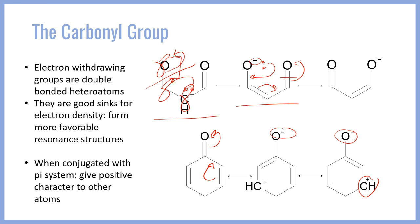Withdrawing groups take on formal negative charges and create formal positives on other atoms they are conjugated with. The significance of this is that if we look at the overall molecule — the uncharged resonance structure — we would see that this molecule is going to carry significant partial charges, such that these two carbons are going to be partially positive and this oxygen is going to have a strong partial negative character due to the contribution of those resonance structures.